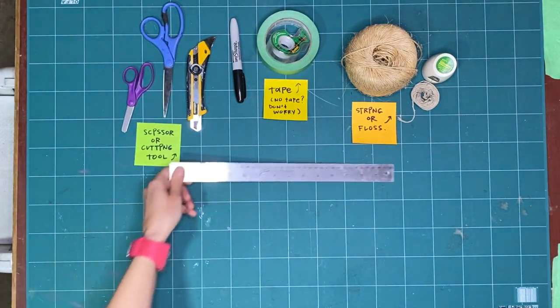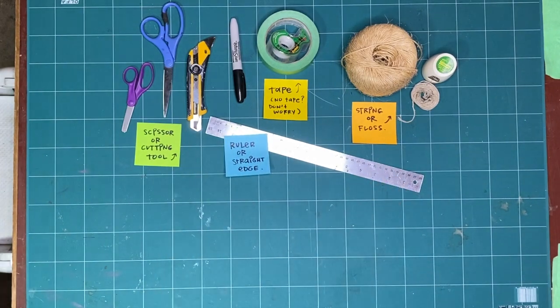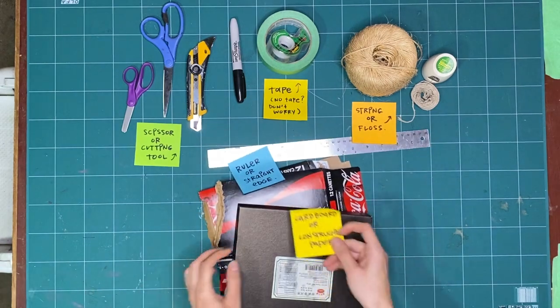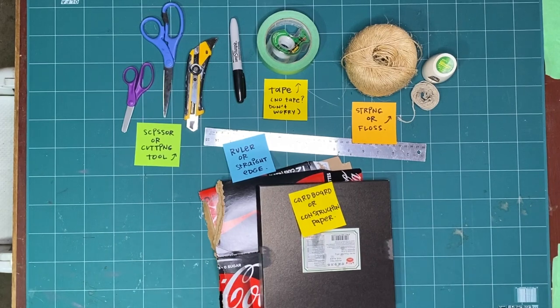A ruler, or straight edge. A straight edge is something that is straight and strong enough. If you cut along it, it won't be damaged. And finally, some cardboard or construction paper. Anything you can safely cut through, but I suggest at least something as heavy as construction paper, so it isn't too flimsy.